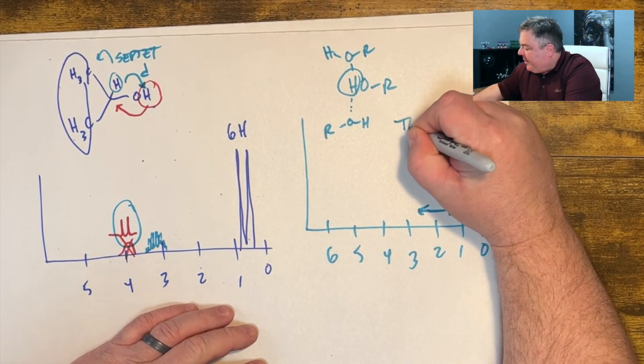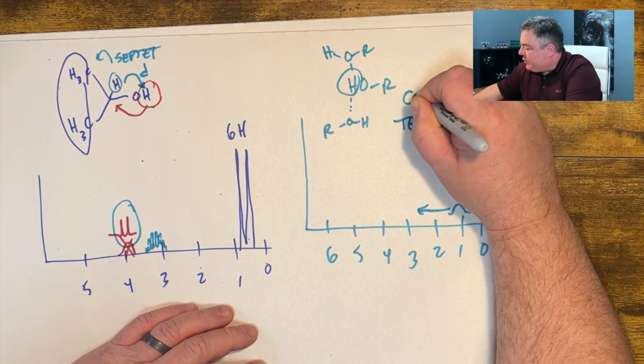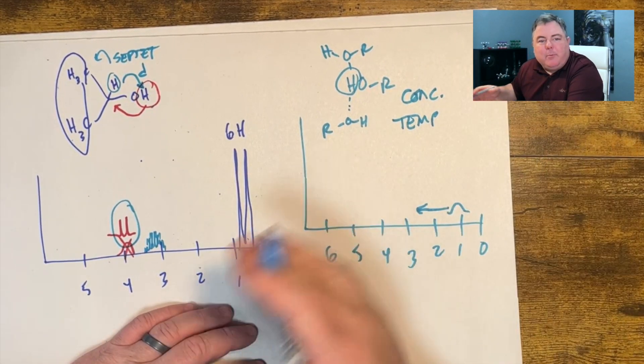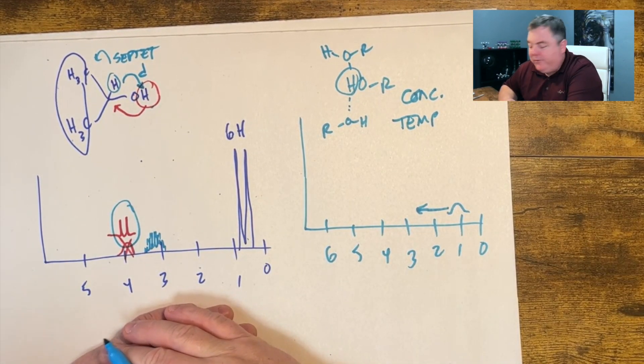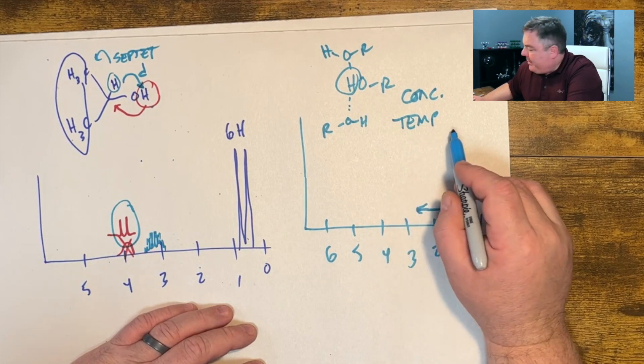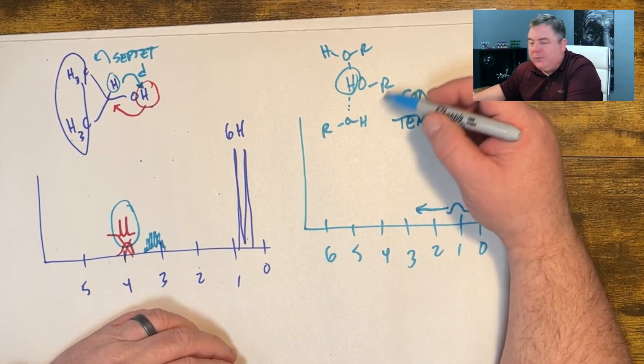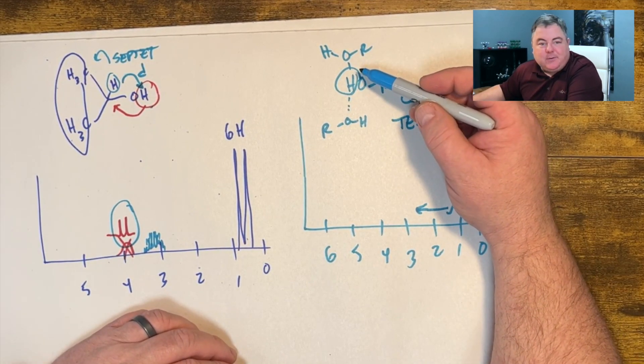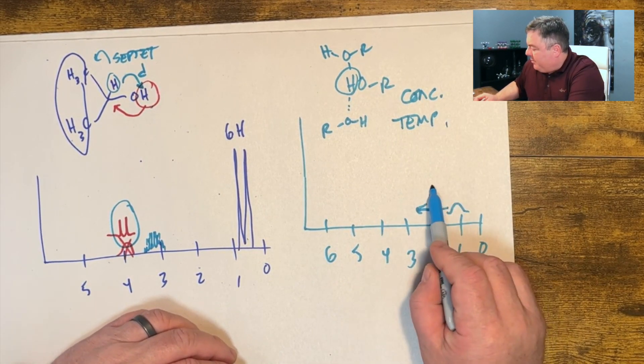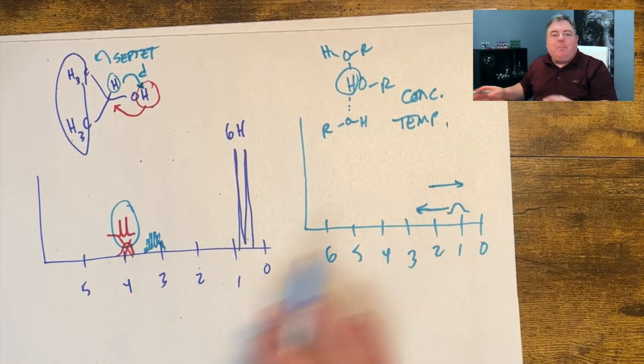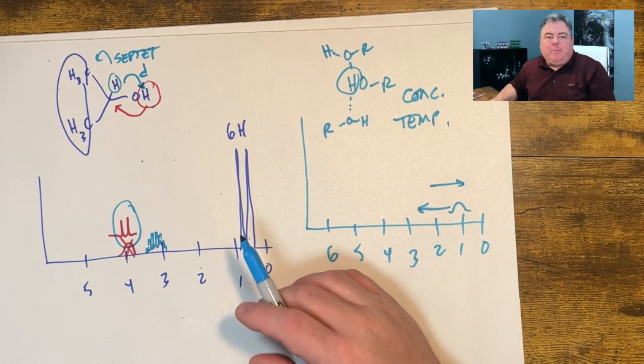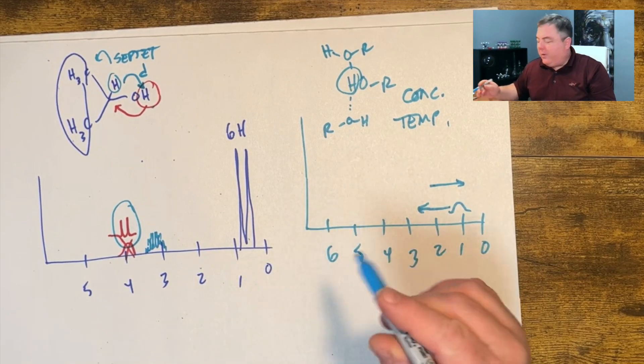And even the temperature, the concentration matters, it can move around from day to day if you have changed your concentration. The temperature of the room matters because if the room is warmer, the molecules are vibrating faster, you have less hydrogen bonding, and then they would move more to the right. So they move around from day to day, so we don't worry too much about where they show up.